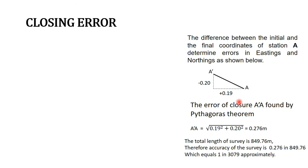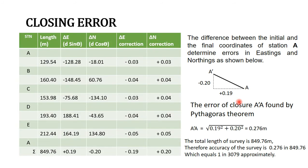Before we go into the serious business of calculating the corrections and the like, let us look at the closing error. Because wherever there is a need to do the calculations, it means that we are not closing at the start point of the closed polygon traversy. So let's look at this diagram.